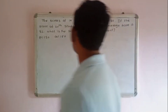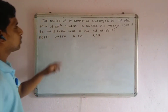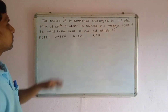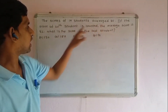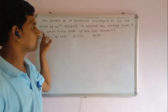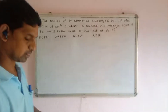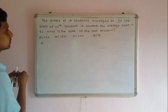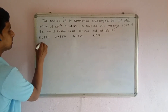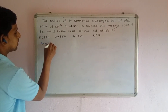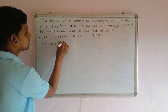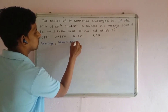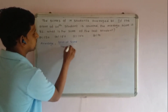There are 19 students and their average score is 80. The average formula is: average equals sum of scores divided by number of items. So with 19 students and average 80, we can find the sum of scores.